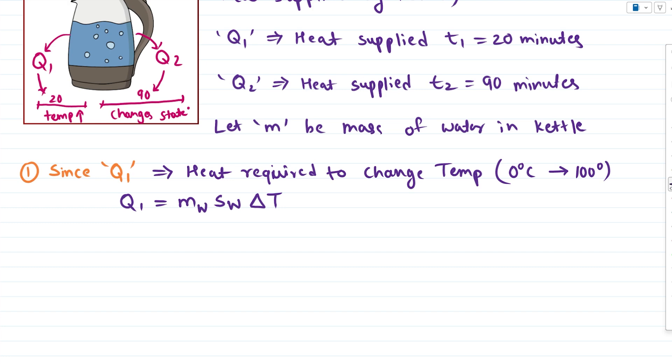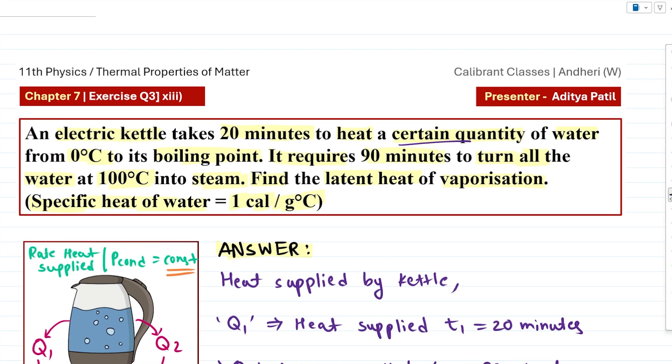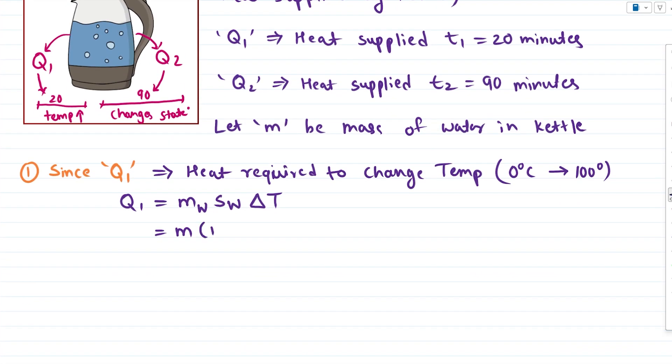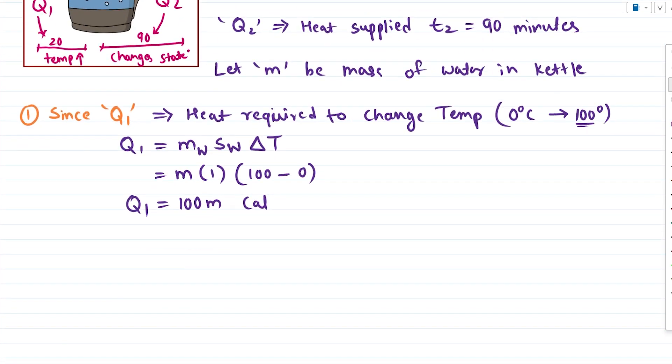For this, mass of water M is assumed. In the question it is given that the specific heat of water is 1 calorie per gram per degree Celsius. So we will put specific heat as 1. And delta T is the final temperature 100 degree Celsius minus the initial temperature 0 degree Celsius. So we get 100M. So that is the value of Q1 in terms of M and its unit is calories. Let me mark this as equation number 1.